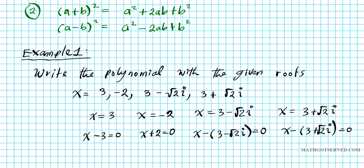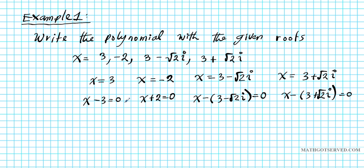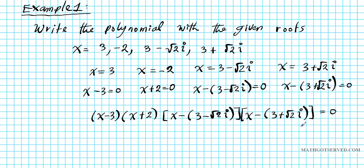Now what we're going to do next is we're going to use the reverse of the zero product property to express this as a product of factors. So that yields (X-3)(X+2)[X-(3-√2i)][X-(3+√2i)] = 0. Now we're just simply going to expand the left side of this equation to generate the polynomial with these given roots.